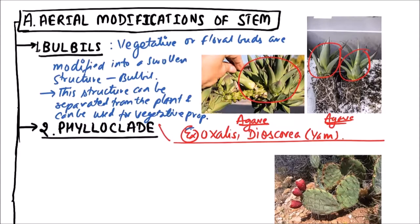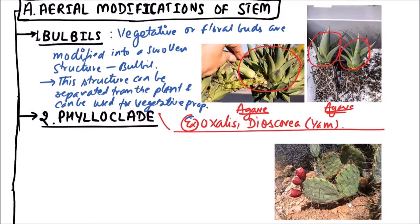Now the second one is phylloclade. Now what is phylloclade? Clade represents the stem. Phyllo means leaf. So it is a stem which appears to be leaf-like.